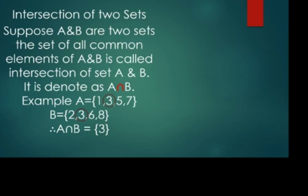For a clearer understanding, consider this example: set A contains elements 1, 3, 5, 7 and set B contains elements 2, 3, 6, 8. In both sets, element 3 is common. So A ∩ B = {3} — only one element is common between the two sets.